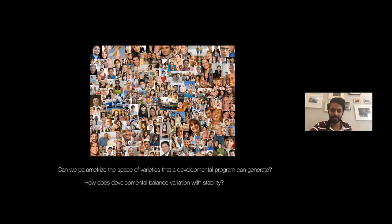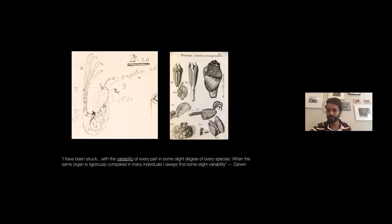The question I wanted to ask was: can we parameterize the space of varieties that a developmental program can generate by looking at many thousands of outcomes? This is an ancient problem. Darwin published several books on barnacles and famously said I'm sick of them.